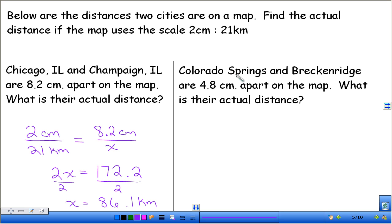And then the next one, Colorado Springs and Breckenridge are 4.8 centimeters apart on the map. What is their actual distance? So we're using the same scale up here. So we have 2 centimeters is equal to 21 kilometers. I'm going to leave the units off this time, because we usually don't put those in a proportion. Is equal to, our centimeter up here is 4.8. And we're solving for the actual distance. So go ahead and take a second to solve that one.